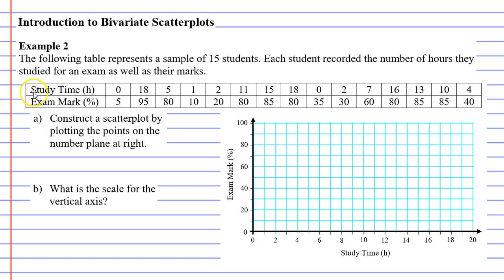When we look at this table, we can see study time on the top row. A student who did zero hours of study received an exam mark of 5%, so zero hours of study means a low mark of 5%. Another student did 18 hours of study and got a high mark of 95%.